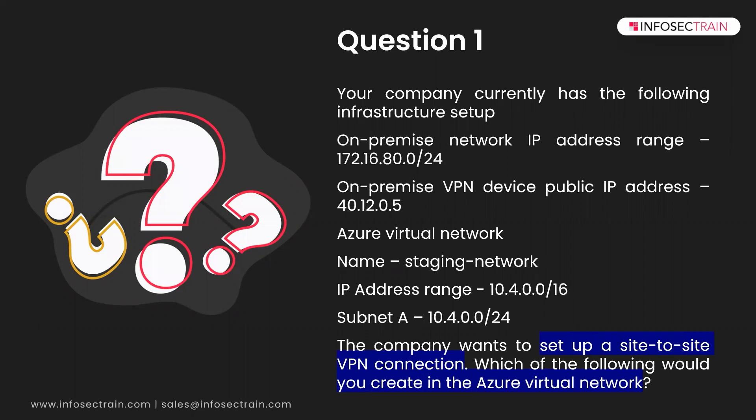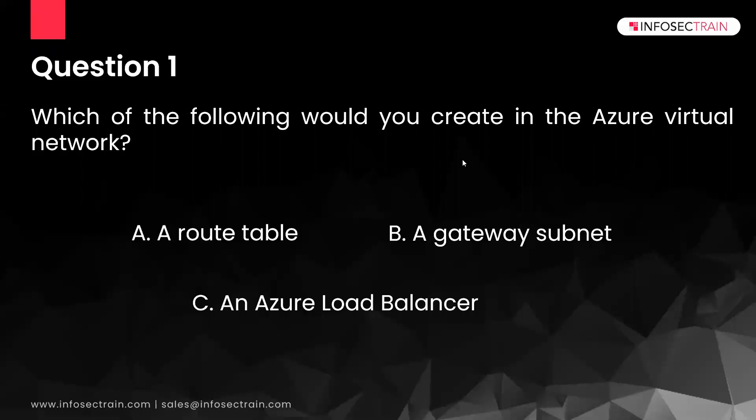The highlighted key phrase is 'set up a site-to-site VPN connection and you are creating the virtual network.' The answer for this question is option B — a gateway subnet. If you have deployed VPNs before, you will know that the gateway subnet is the most important thing when deploying your VPN gateway. You will be creating a subnet named gateway subnet in your VNet, and this option is also available at the top in your Azure portal.